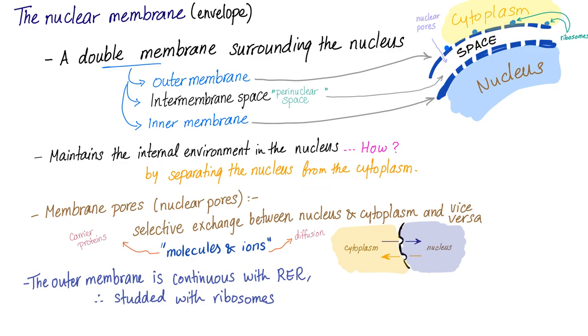It has membrane pores, again, for selective exchange. Molecules and ions. Molecules are big. They need carrier proteins. Ions are small. They can't just diffuse. The outer membrane is continuous with the rough endoplasmic reticulum. And it's studded with the ribosome, same as with the rough endoplasmic reticulum.